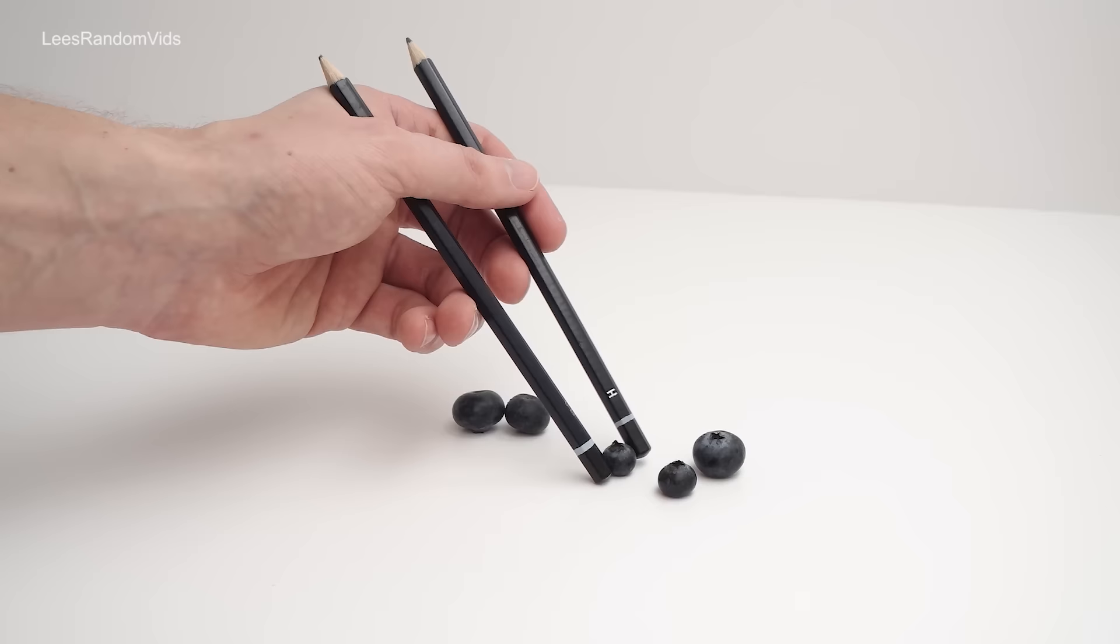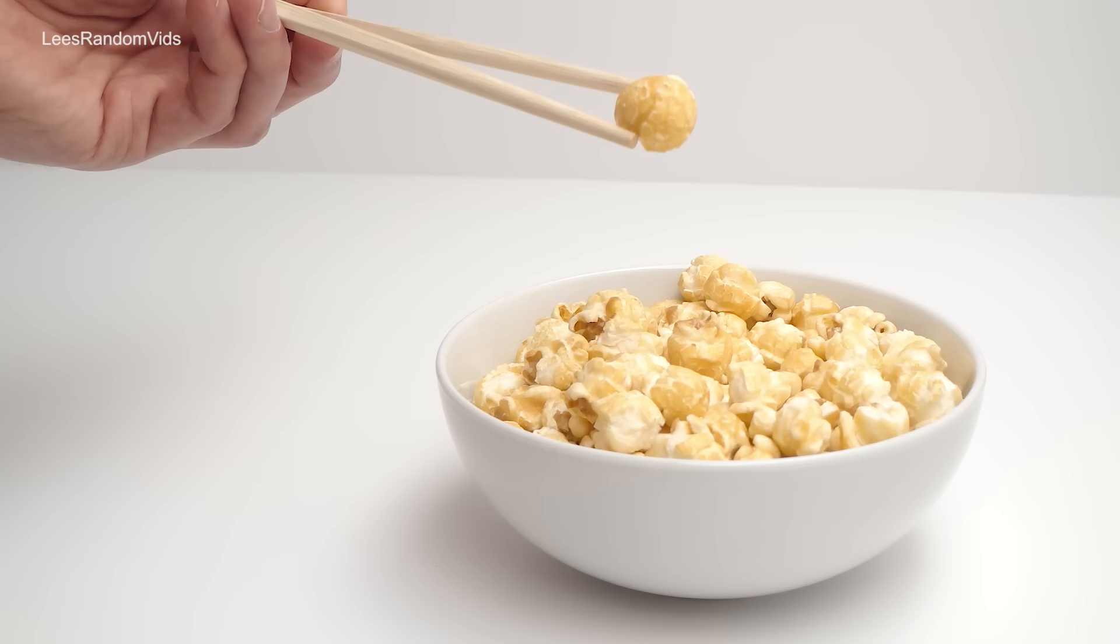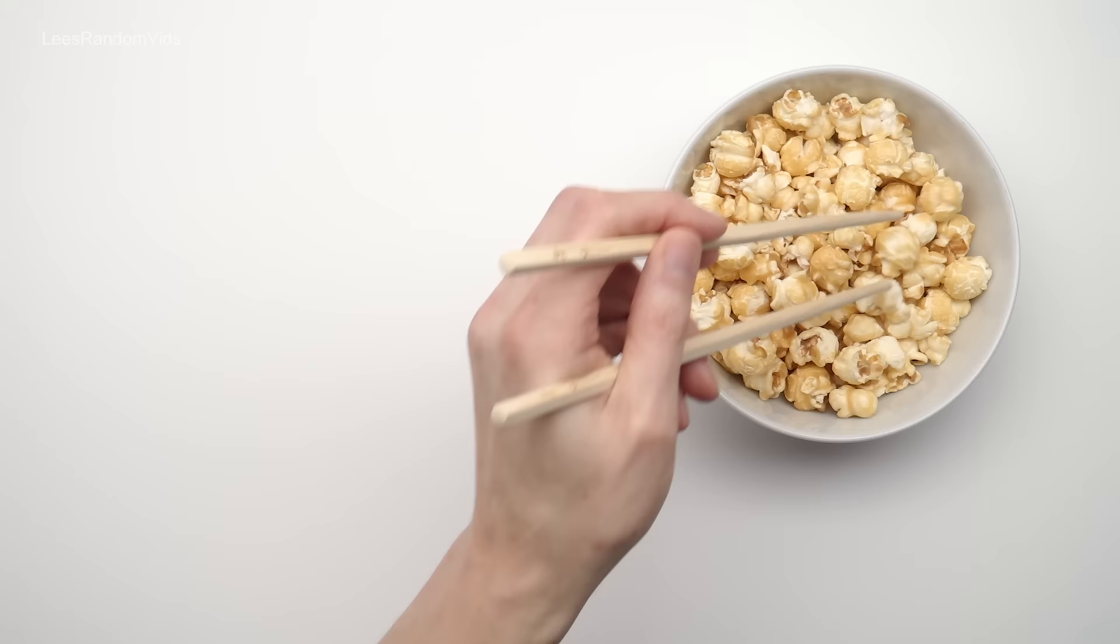So here's a little tip courtesy of Lee's Random Vids: popcorn. I believe popcorn is very good for practicing your chopsticks, because like with any technique, it's about repetition. You've got to do it lots of times. And popcorn is nice and light and it's all different sizes and uneven shape as well, so it's really easy to grip.